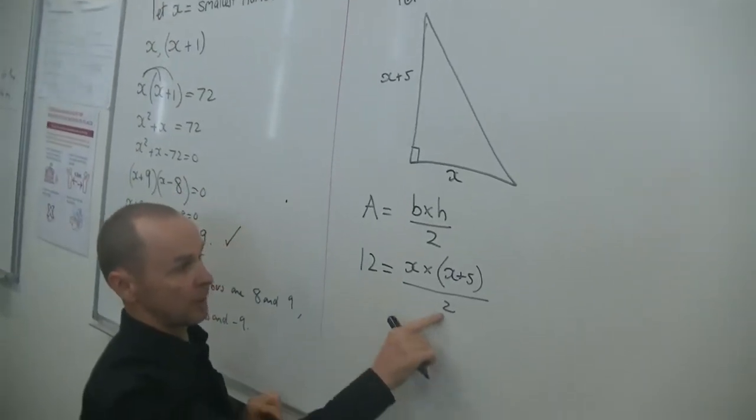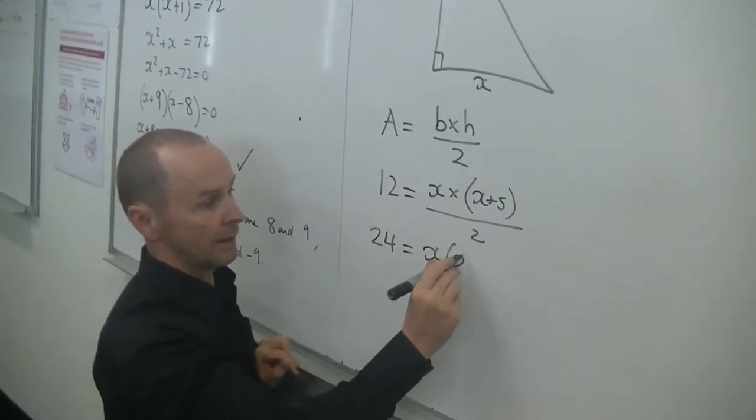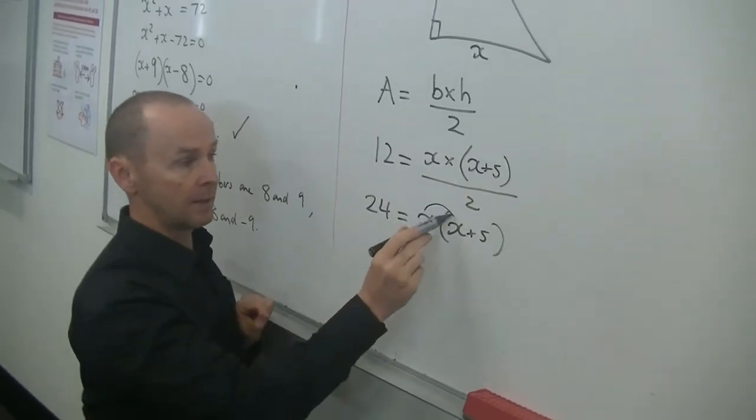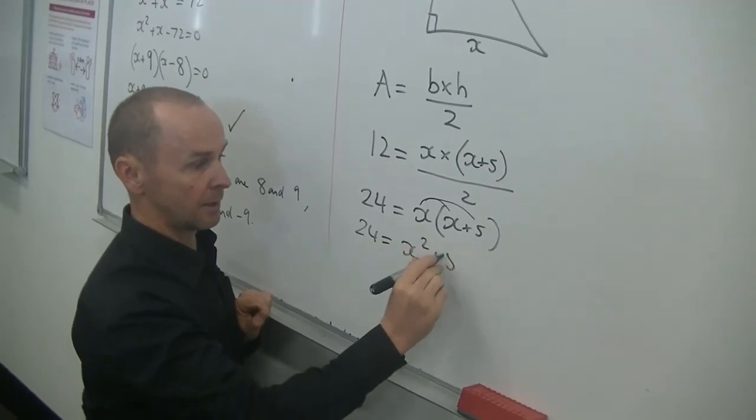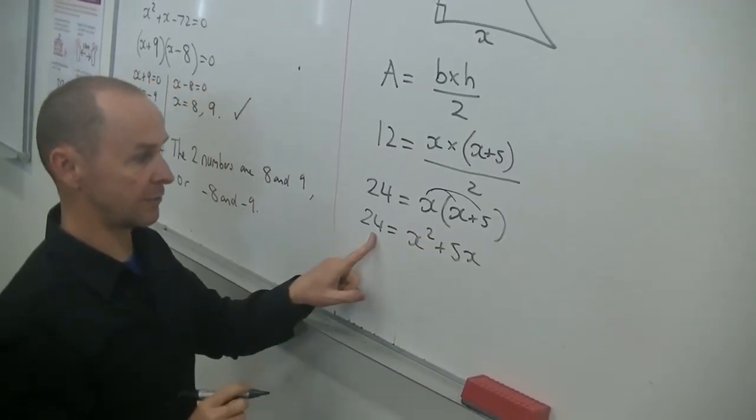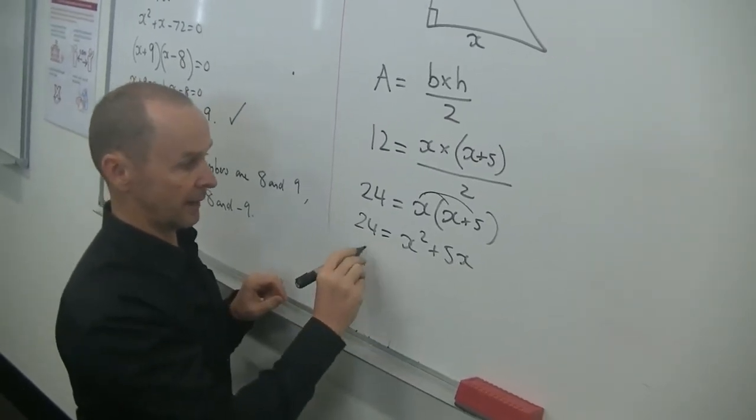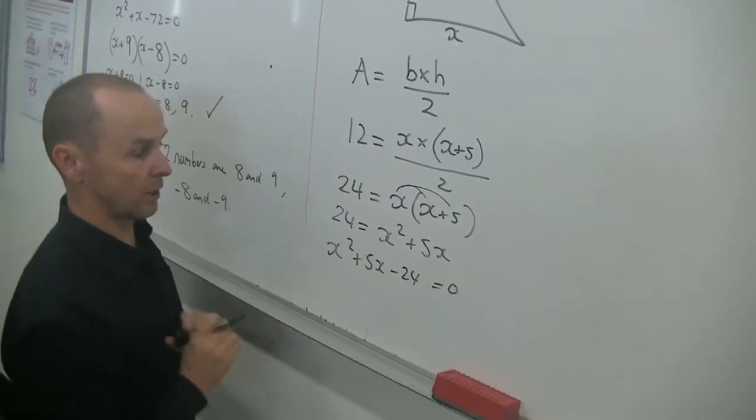So, first step, times both sides by 2. 24 equals x times x plus 5. I'm just going to do one step at a time. Expand the brackets, so we get 24 equals x squared plus 5x. Bring everything to one side, so the other side is equal to 0. So I'm going to subtract 24 to both sides. So I get x squared plus 5x minus 24, and the other side equals 0. And now we can factorize.